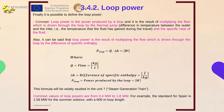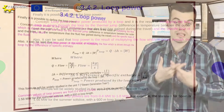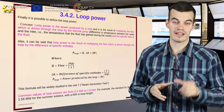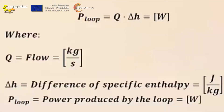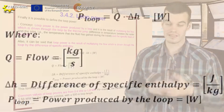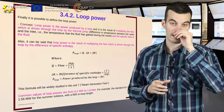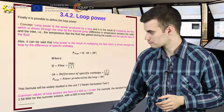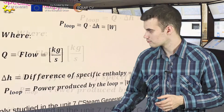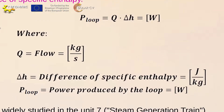Finally, we must define what is loop power. Loop power is the power produced by a loop and it is the result of multiplying the flow which is being driven through the loop by the difference of specific enthalpy, that is joules divided by kilograms. Here we can see this formula.